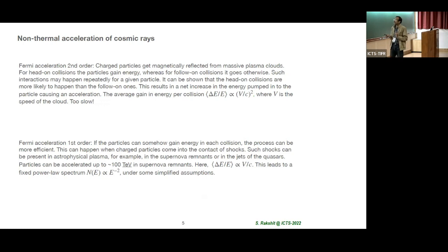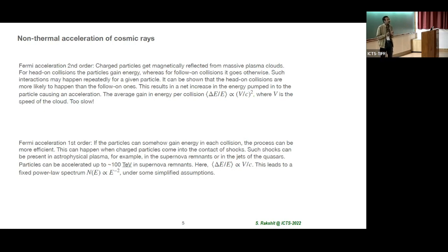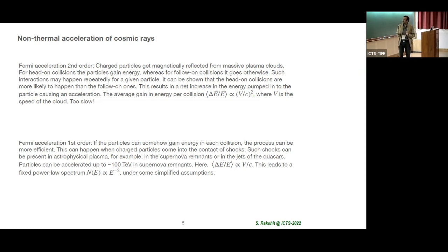You see here the spectrum is multiplied by E to the power 2.6 — it's a power law, but with different strength, so you have indices from roughly 2.6 to 3. The Fermi acceleration in first order is the most promising mechanism because the energy gain when charged particles interact with shock waves is proportional to V/C rather than V/C squared as in second order, making this process more efficient. Under some assumptions it gives you a flux like E to the power minus 2, and taking energy losses into account you can get indices of 2.3 to 3.